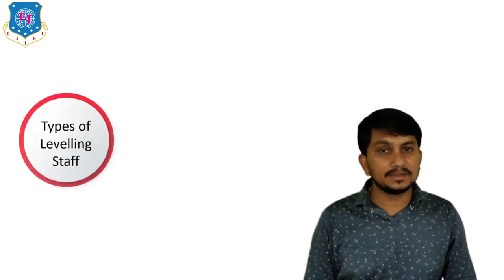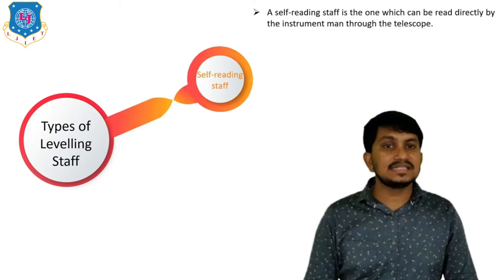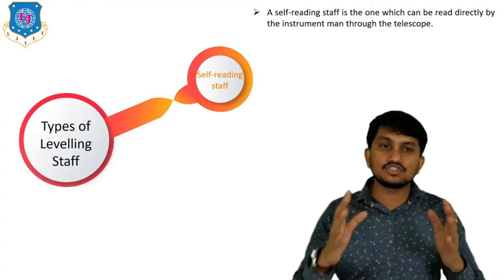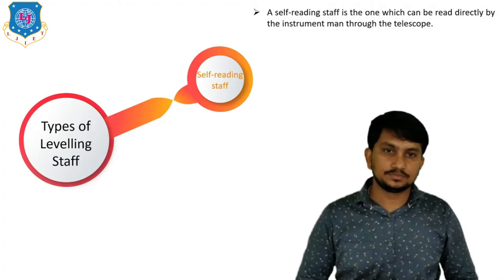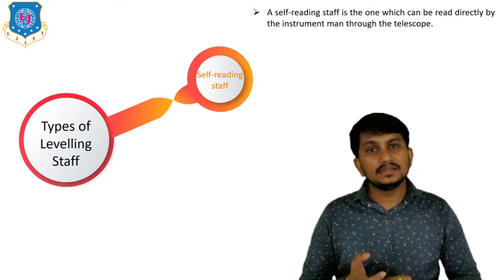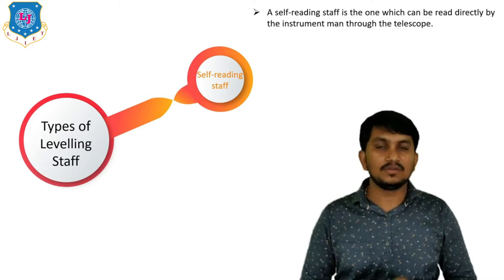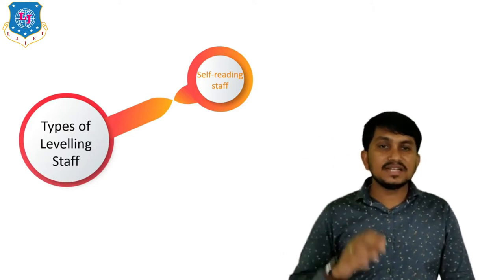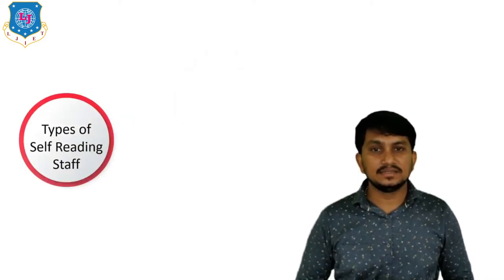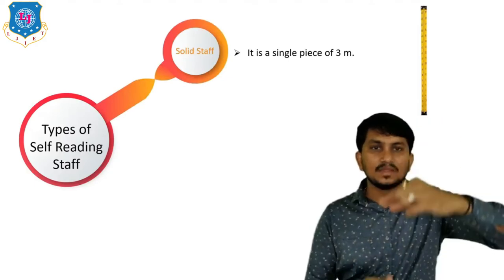There are various types of leveling staff. Mainly it is of two types. The first is the self-reading staff, which can be read directly by the instrument man through the telescope. In the self-reading staff, the readings are taken by the person standing at the dumpy level.